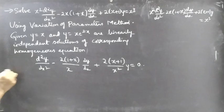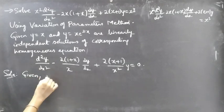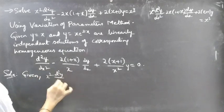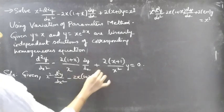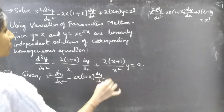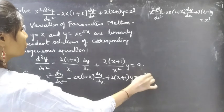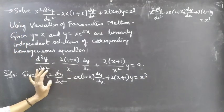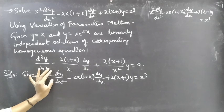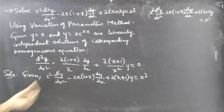The given differential equation is x² d²y/dx² minus 2x(1+x) dy/dx plus 2(x+1)y = x³. We'll write this in standard form by making the coefficient of d²y/dx² equal to unity, by dividing both sides of the equation by x².